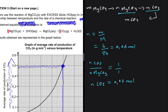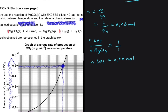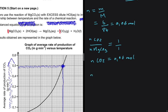Now that we have the number of moles of CO2, we can find its mass: mass = moles × molar mass = 0.06 × 44 g/mol, giving us 2.64 grams of CO2.